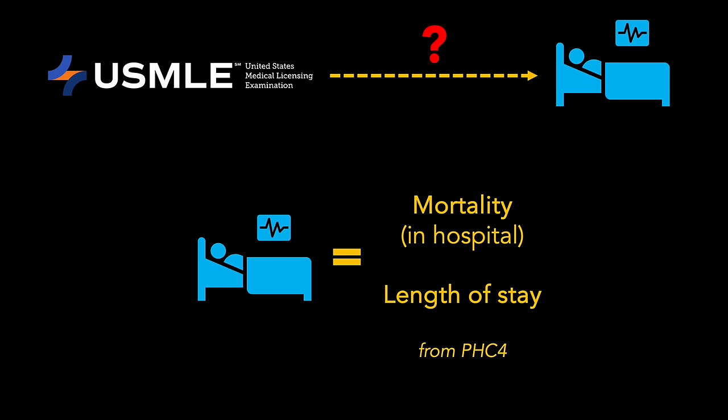So now we need the clinical outcomes, and the authors chose two from the PHC-4 dataset: in-hospital mortality, and for patients who survived discharge, length of stay. These are pretty good outcomes because mortality certainly matters to patients, and length of stay is probably important too. And both of these outcomes are objectively defined and resistant to bias.